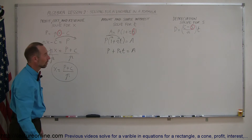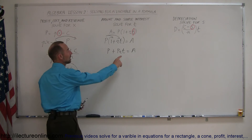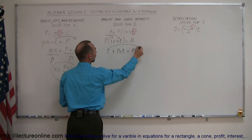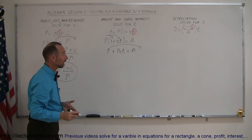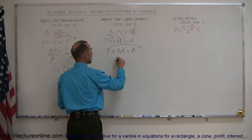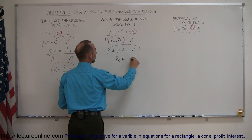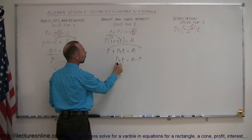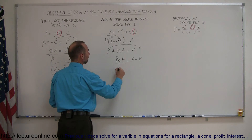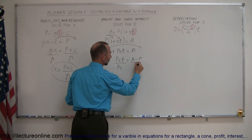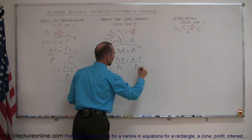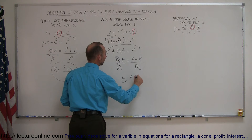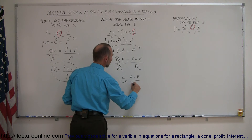Get rid of the parentheses first. Now, since we're looking for t, we get rid of the term that does not have a t in it — move that to the other side, and of course when we move that to the other side, that becomes a negative p. So we have pr times t is equal to a minus p. Finally, we divide the left side by p and r to get rid of the coefficient, and of course we must do exactly the same to the right side. The p's cancel out, the r's cancel out. We have t is equal to a minus p divided by p times r.